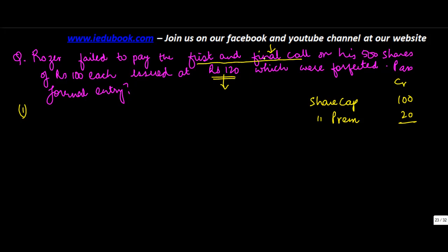Now we don't know what is the amount of first and final call, so let's say this call is for 20 rupees. So then basically you've got your premium at the time of allotment. And allotment, as I told you, normally the money is paid at the time of allotment which includes premium.